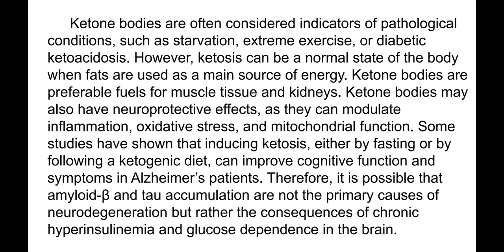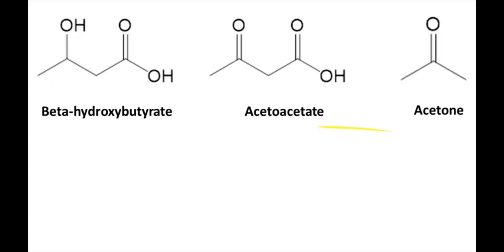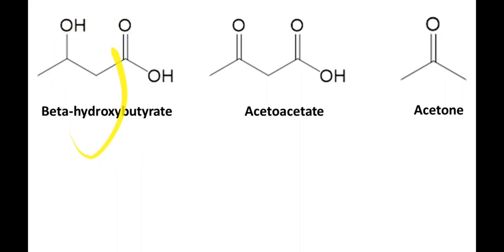It is therefore possible that amyloid beta and tau fiber accumulation are not the primary causes of neurodegeneration, but rather the consequences of chronic hyperinsulinemia and glucose dependence in the brain. Ketosis is a normal state of the body, and especially in older age it may be the only viable option. Beta-hydroxybutyrate is the main ketone body; acetoacetate is less efficient.